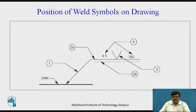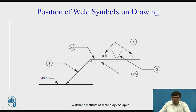Now we are looking at the position of weld symbols on a drawing. This is the convention for how a welding joint is represented. You can see the part where the joint is formed. From there we draw an inclined line called the arrow line, and then a horizontal line called the reference line. Above that we have the welding symbol.